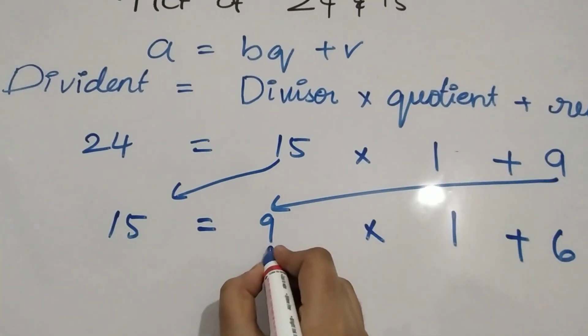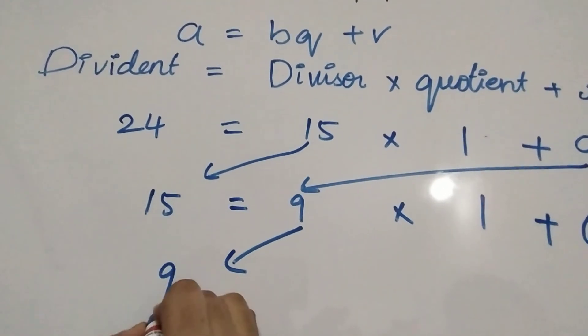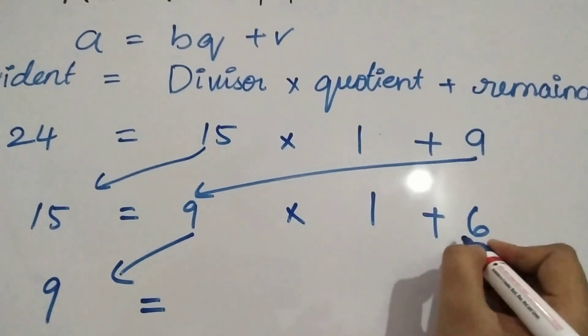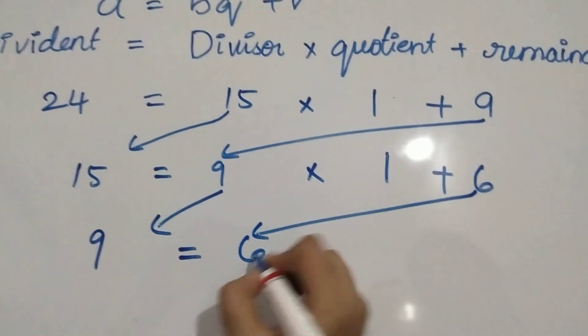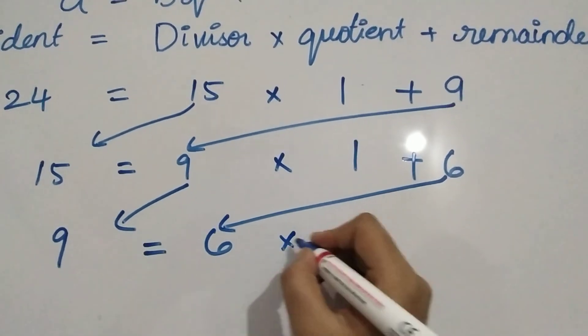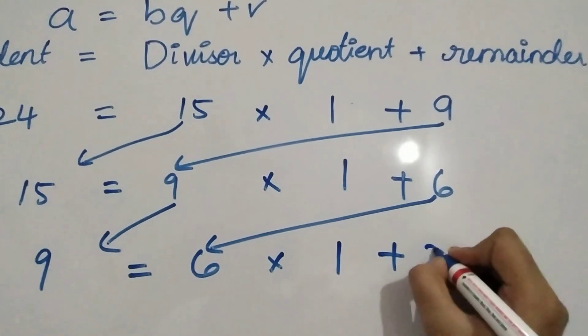Then again 9 will become the next dividend, 6 becomes the next divisor. It goes once, 3 is the remainder.